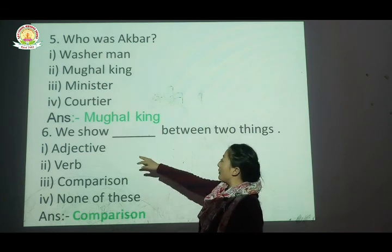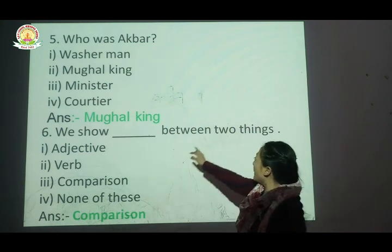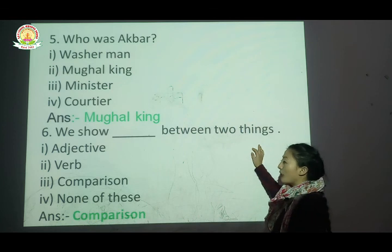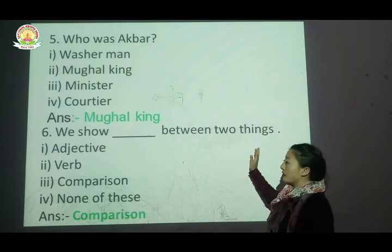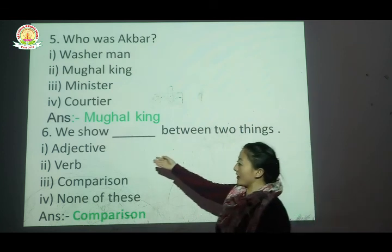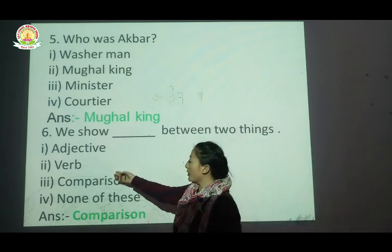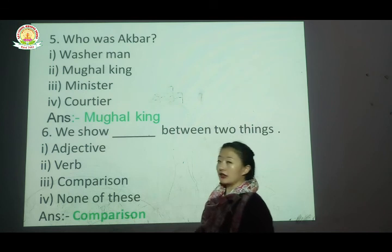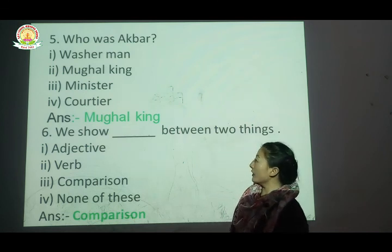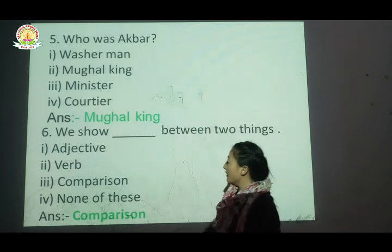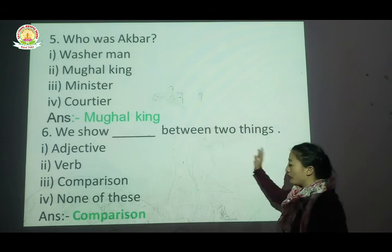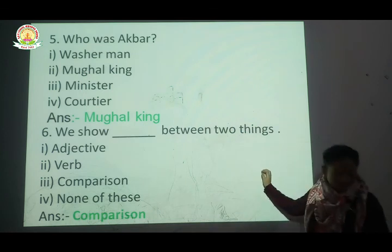Question number six: We saw blank between two things. Options are: adjective, verb, comparison, or none of these. The correct answer is comparison — we saw comparison between two things.